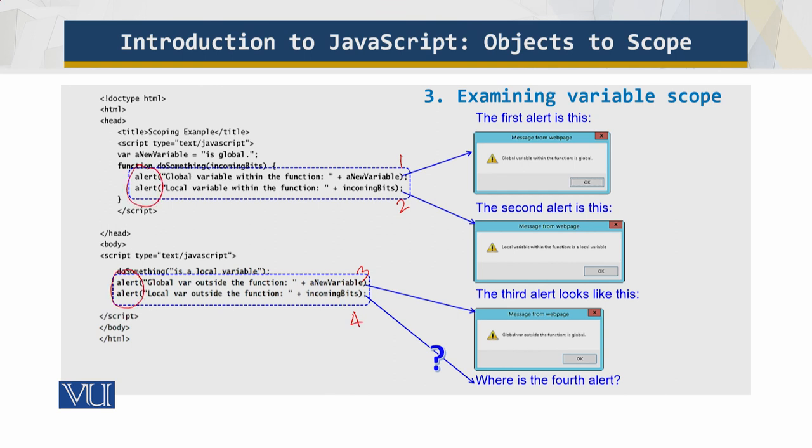But what we see here is only three alerts - one, two, and three. So where is the fourth one? The problem is that this variable is within the scope, and you see that this was local and it was called outside the function itself.